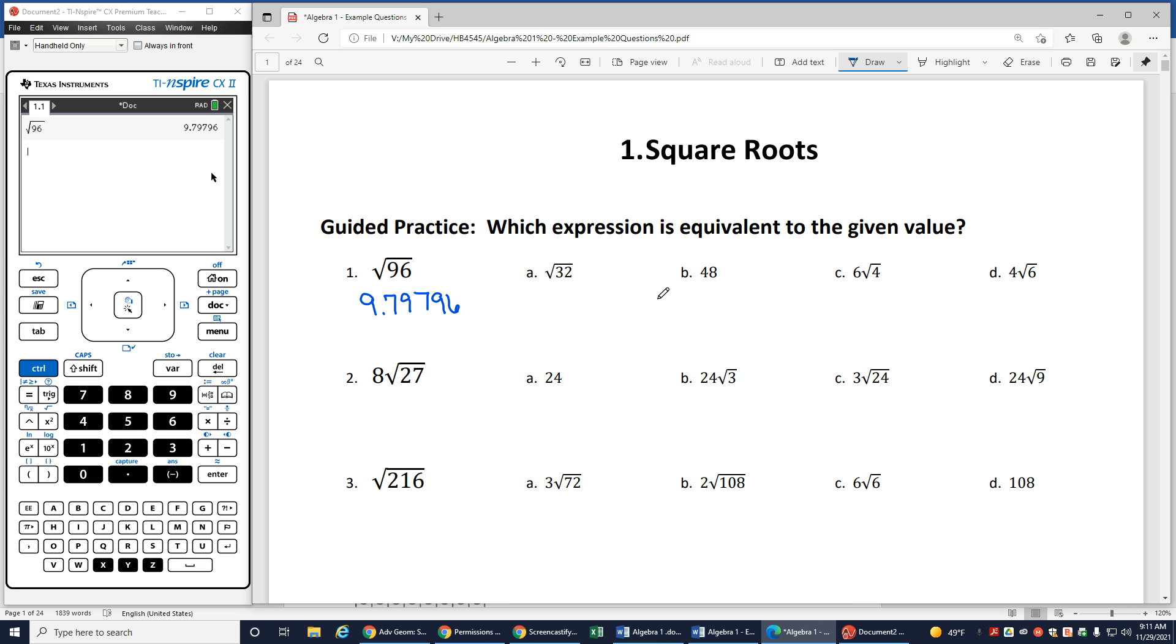So then I'm going to go and see which one of these. I know obviously 48 is not going to give me 9.79796, but let's see which one of these three will. If I do the square root, control x squared of 32, notice that is not 9.7976, so that's not my answer. The next one, 6 square roots of 4, so I'm going to hit the 6 first, and then my square root of 4. And that's 12, so that's not going to be correct.